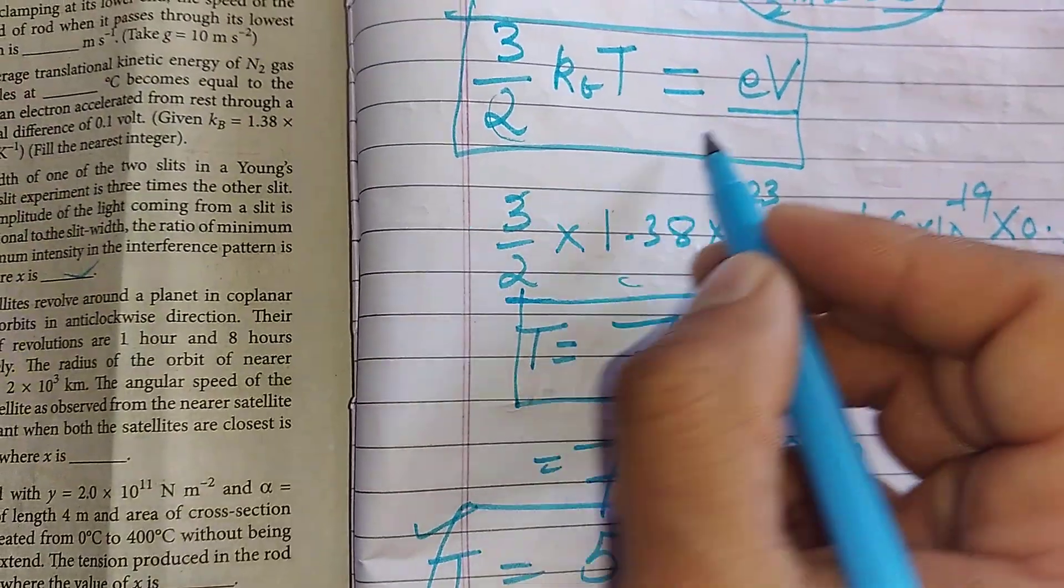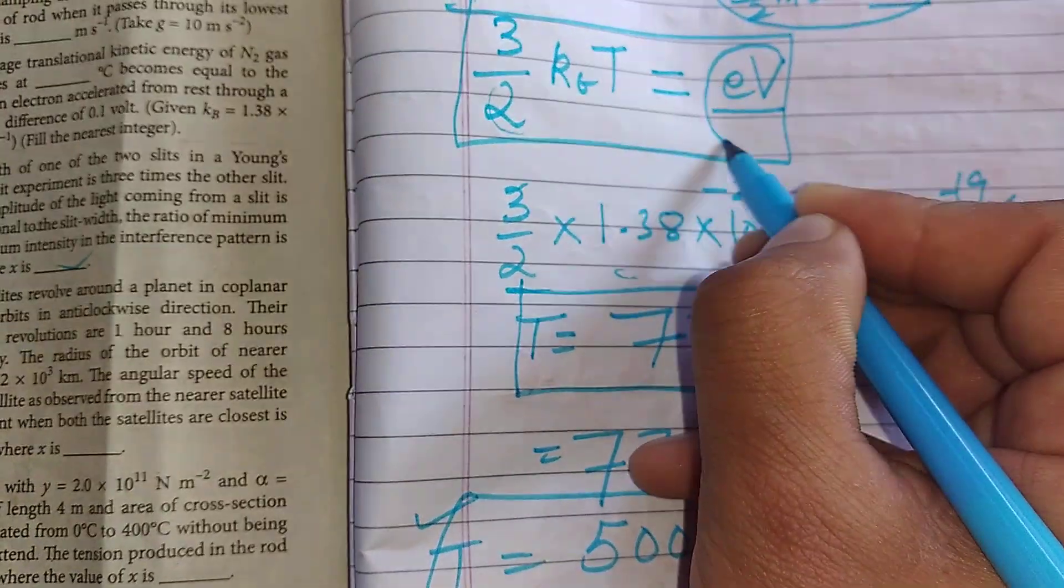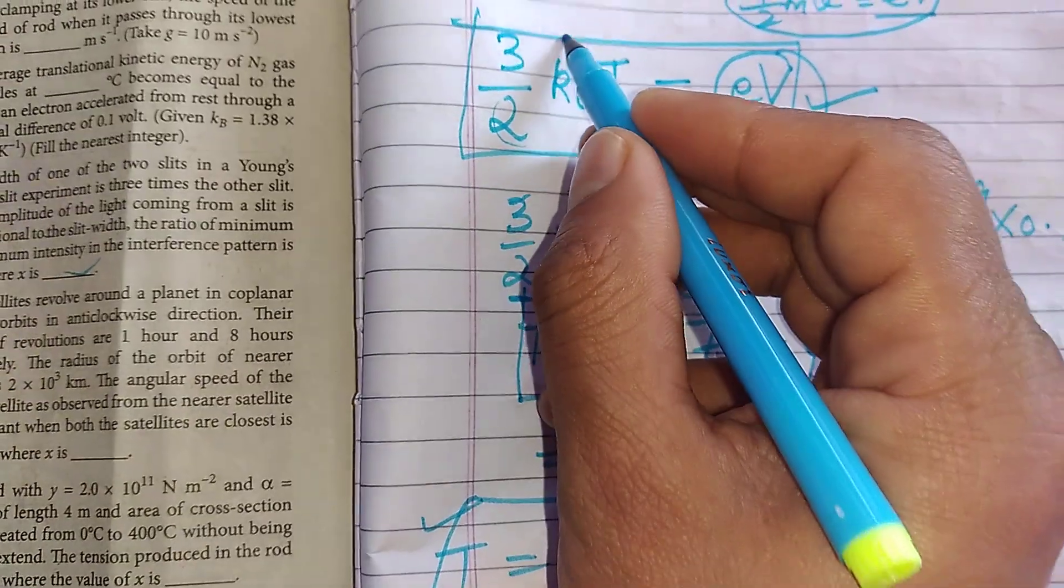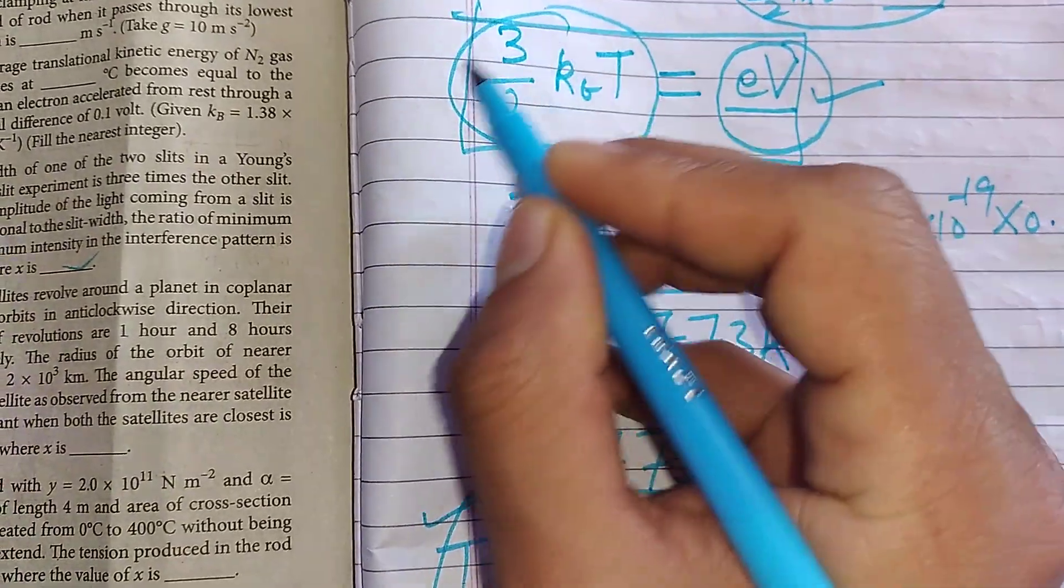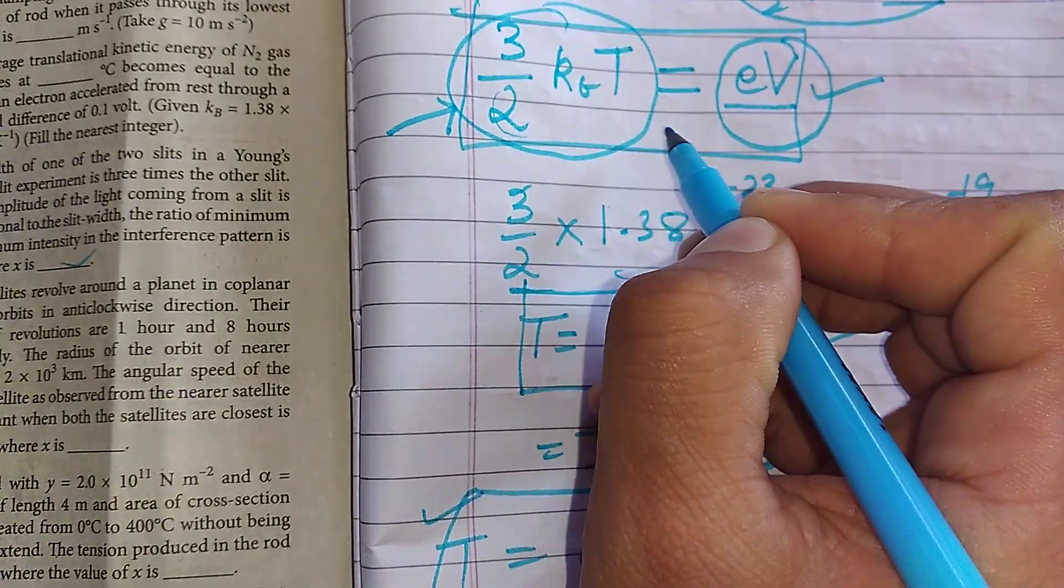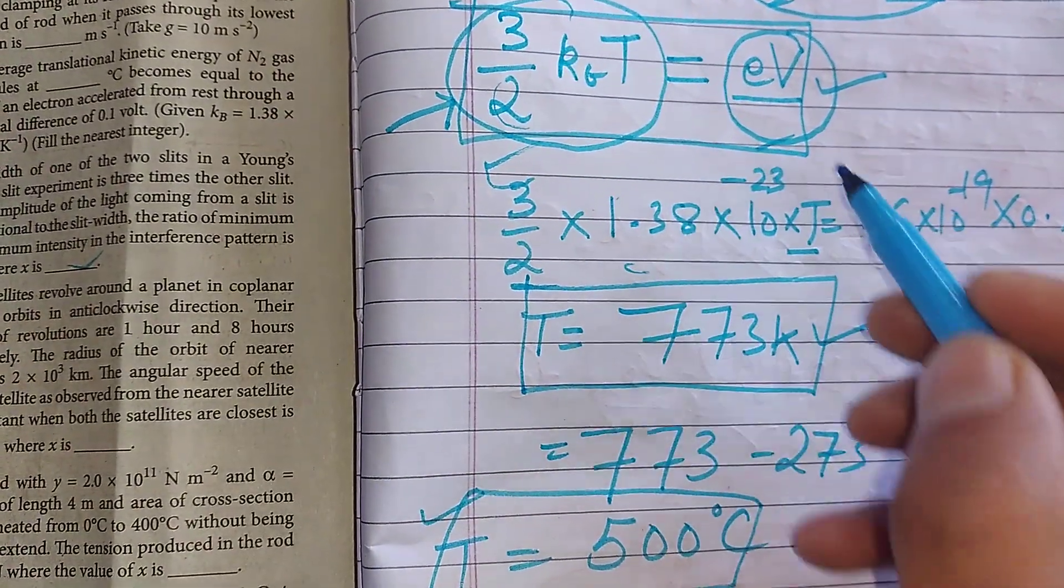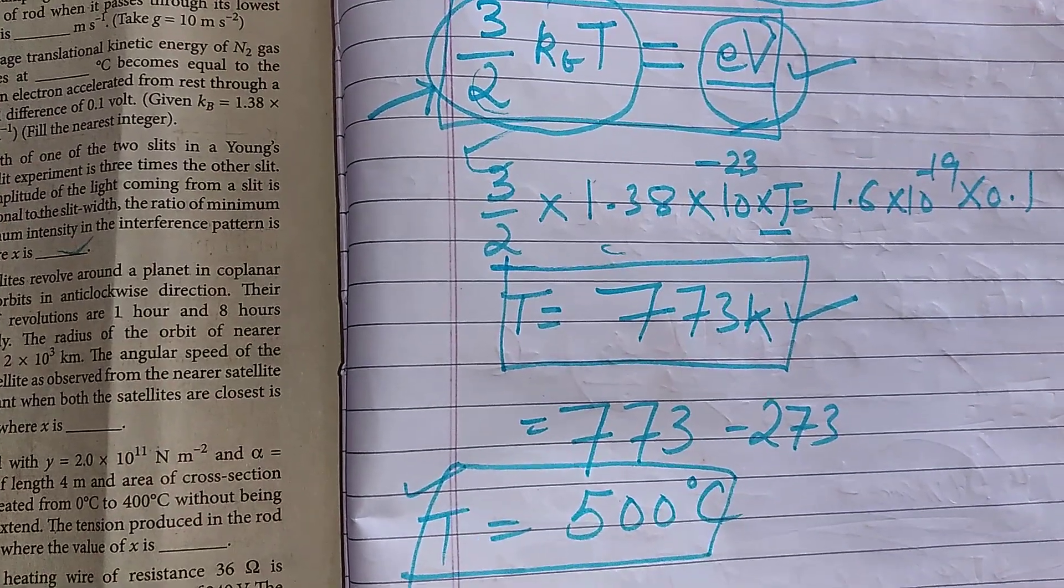So basically, a charged particle kinetic energy happens when it is being accelerated through some potential difference. And in molecules of kinetic energy, we have translational 3/2 kBT. And we have used it to solve it. So given condition, we have substituted and found unknown T. Thank you.